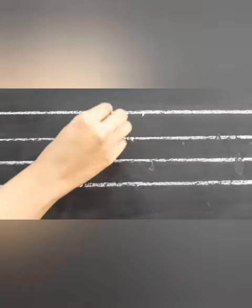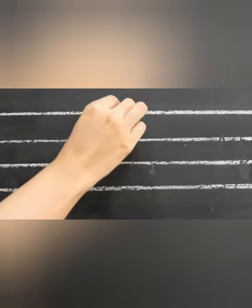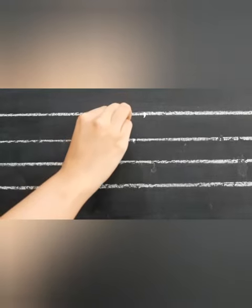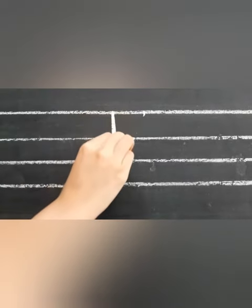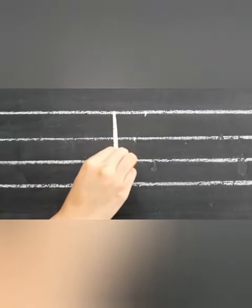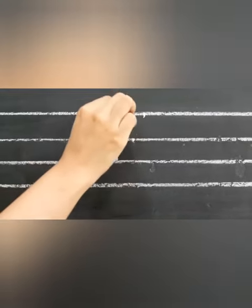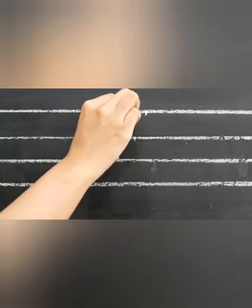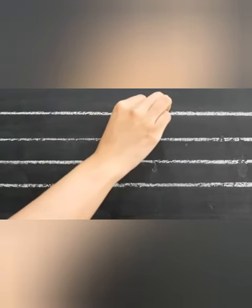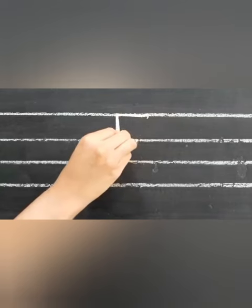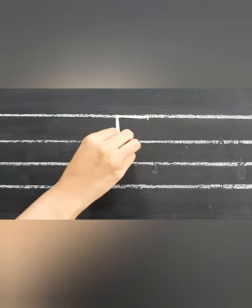Once again, start from the top, go down. Stop on the third line. Go back to the top. Go straight across. Stop on that dot. Then go to the middle.